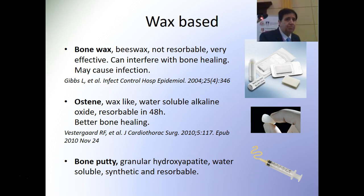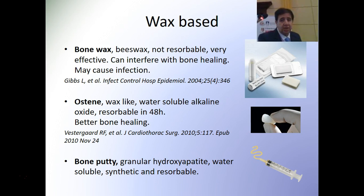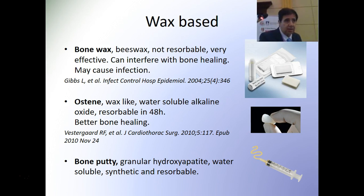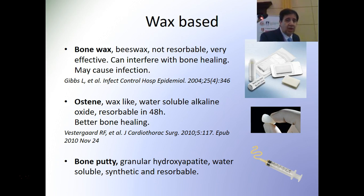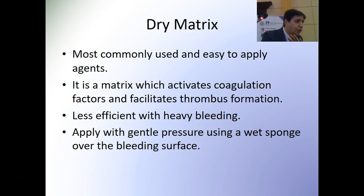We have two types. One is the bee wax itself, which is not resorbable and can interfere with bone healing and may cause infection. The other type is water-soluble and resorbable, which gives better bone healing and lower infection risk. There is also bone putty, which is granular hydroxyapatite, water-soluble, and applied with a syringe. These are rarely used, but whenever we get bony bleeding, these are often the only way to control it.